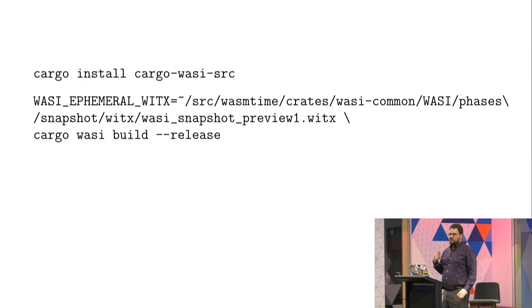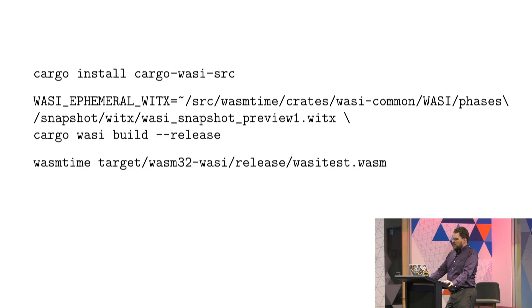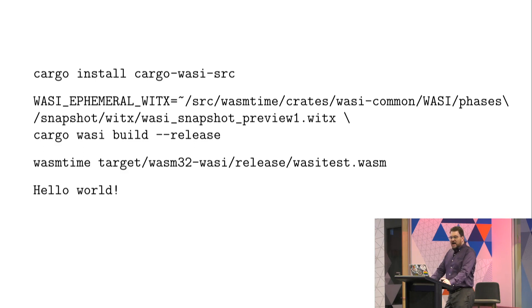We can use cargo-wasi — cargo install cargo-wasi, or use a precompiled binary. We build with cargo wasi build in release mode, setting the variable to point to our modified WitX file. We create a main function that does nothing but call print_greeting and panic if it gives an error. It's defined as an unsafe function from Rust's perspective but safe from a WebAssembly perspective. Then we run our modified WasmTime, give it the binary we just constructed, and we get our hello world by a fairly circuitous route.